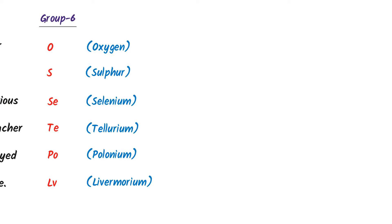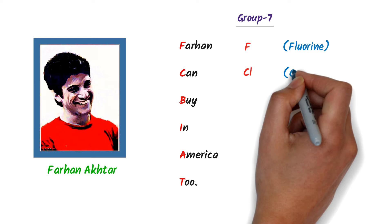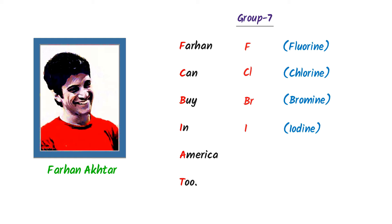Seventhly, consider Farhan Akhtar. We know that Farhan Akhtar can buy N America. F stands for Fluorine, C stands for Chlorine, B stands for Bromine, I stands for Iodine, A stands for Astatine. Thus this is the seventh group of the periodic table.